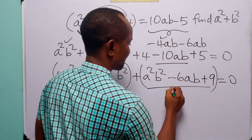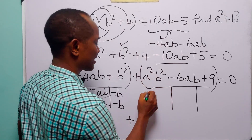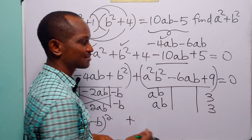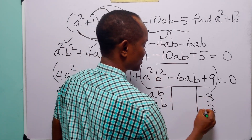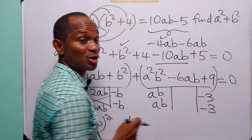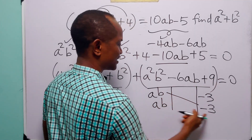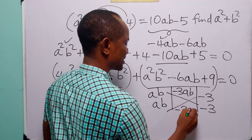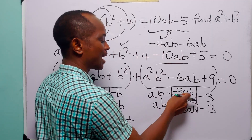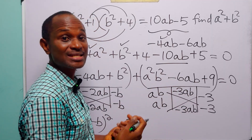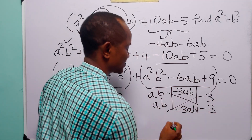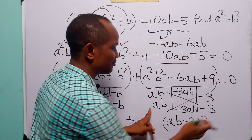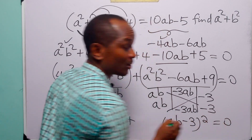Doing the same for the second group: the factors of a squared b squared are ab and ab, and the factors of 9 are 3 and 3. Since the middle term is negative, we use minus 3 and minus 3. Of course, minus 3 times minus 3 still gives plus 9. Multiplying gives minus 3ab and minus 3ab, and minus 3ab minus 3ab gives us the middle term minus 6ab. So this factorizes as (ab minus 3) squared, and of course this equals 0.